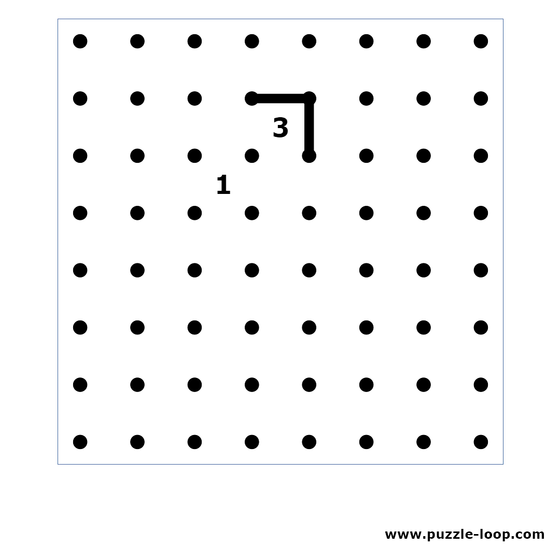The next pattern is when we have a 1 and a 3 diagonally, and the 3 has lines on its far end sides. We can place X's here because otherwise we wouldn't be able to solve the 3.